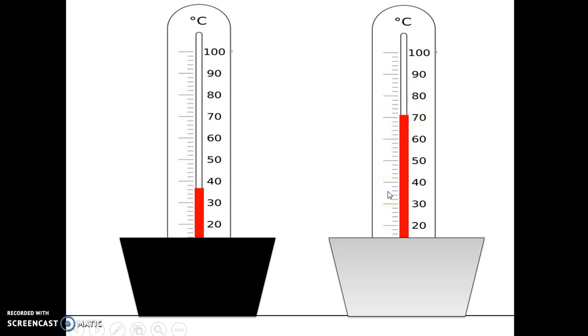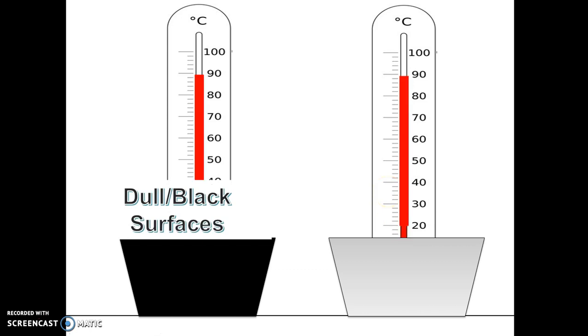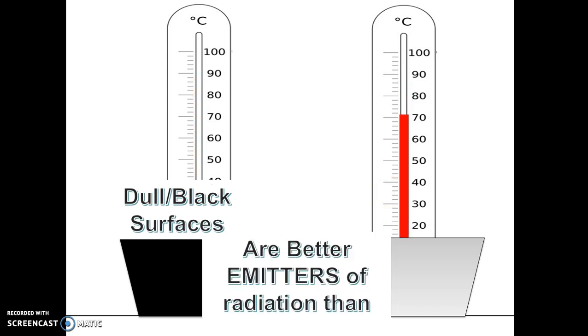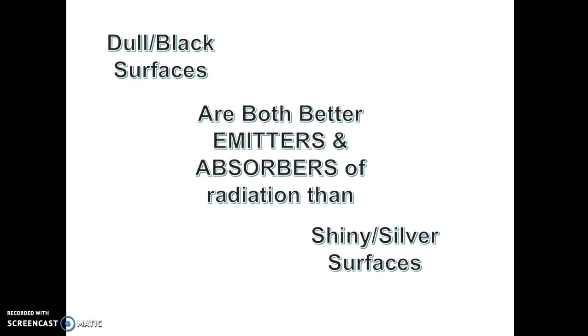So what does this show again? Well, this just shows that dull black surfaces are better emitters right now of radiation than, you got it, shiny white surfaces. So from the last two experiments, we can see that dull black surfaces, basically, they are both better emitters and better absorbers of radiation than shiny silver surfaces.